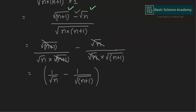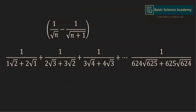Hence, each of these terms equals 1 divided by the square root of the smaller number n, minus 1 divided by the square root of the larger number n plus 1. So 1 divided by square root 2 plus 2 equals 1 divided by square root 1 minus 1 divided by square root 2.